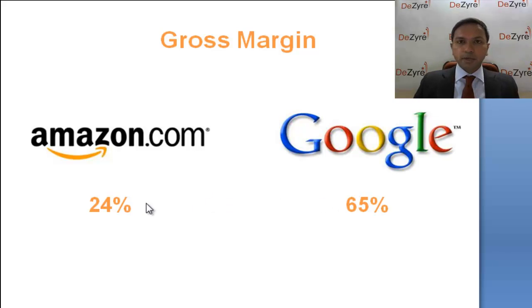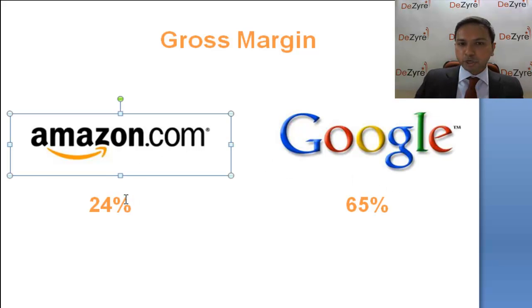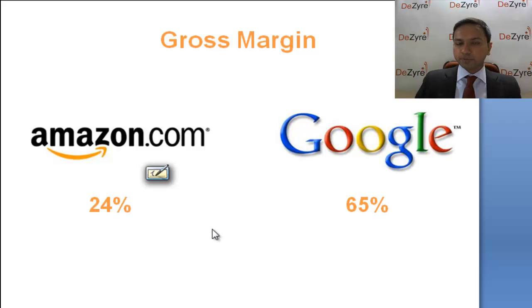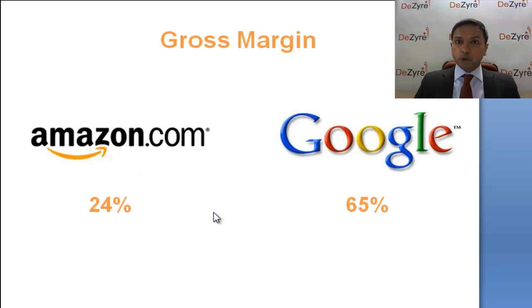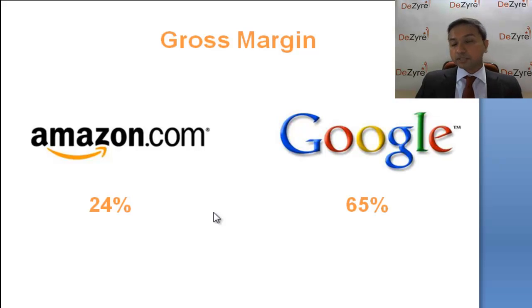Amazon is the number one e-commerce company and Google is the number one search company — both are outstanding, world-class managed companies. Amazon's gross margin is only 24 percent because of what they sell. Take books: if a book sells for ten dollars and costs Amazon five or six dollars, they only keep four or five dollars — sometimes less depending on the product category.